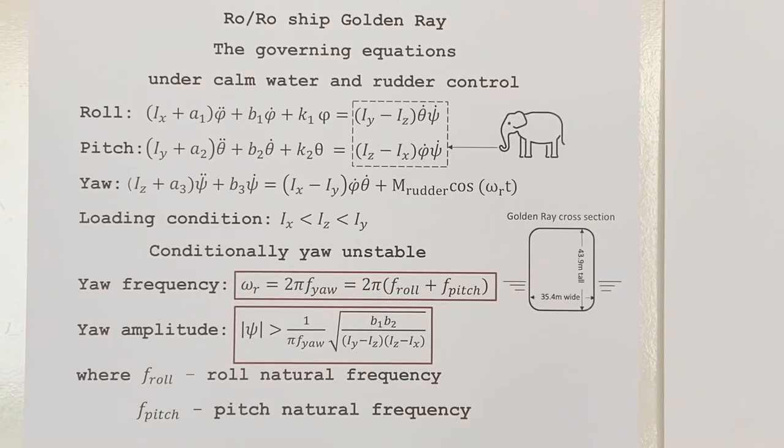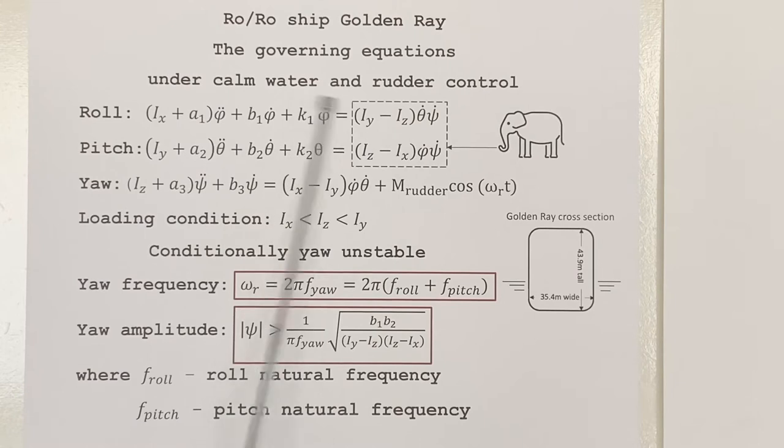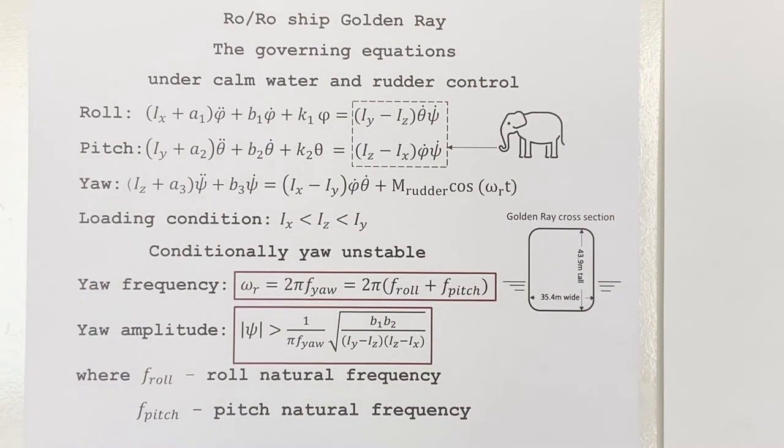Since the Golden Ray capsizes in a very benign environment, its rotational dynamics can be modeled by these equations for roll, pitch, and yaw motions under calm water and rudder control. These equations represent a dynamical system which assumes that Golden Ray is a rigid body in a perfect operating condition, without any issue of static stability.